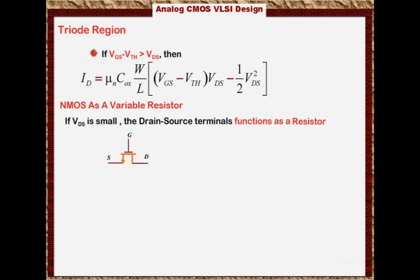if VDS is small, then this transistor can be modeled as a variable resistance. So we're going to have a resistance, and this resistance is from the drain to the source, and the variable resistance depends on VGS.